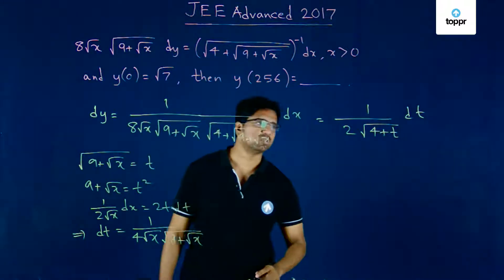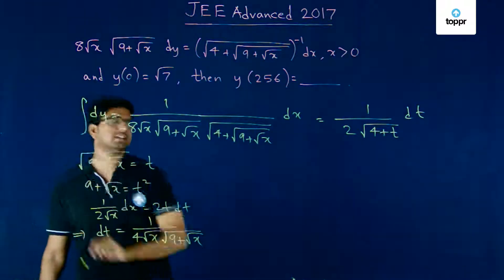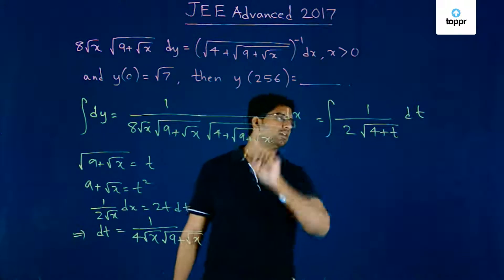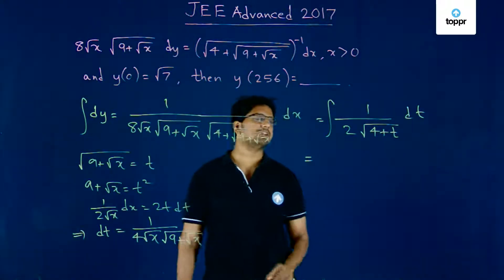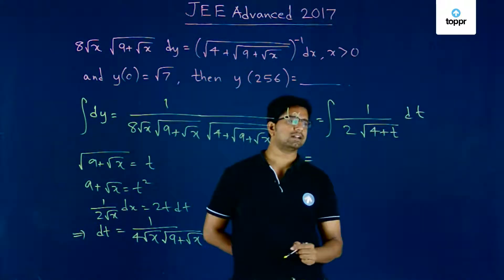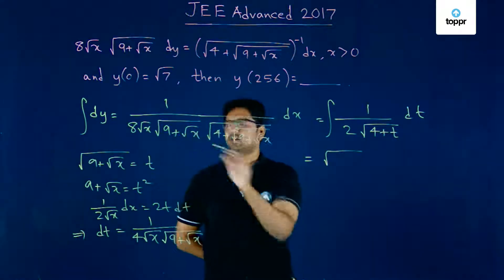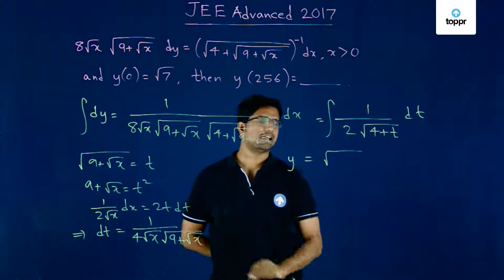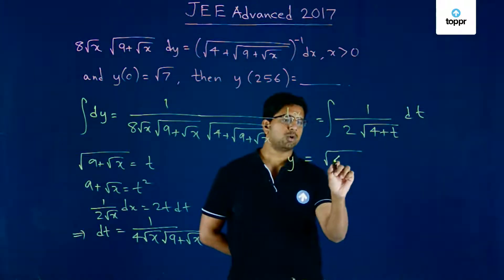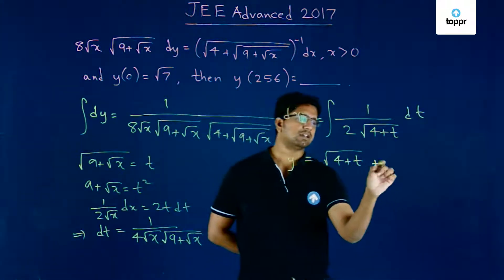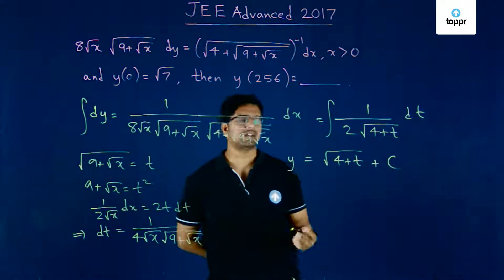If we integrate both sides, we obtain: integrating dy, we get y equals square root of 4 plus t, and of course the constant which we need to find out.